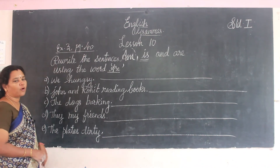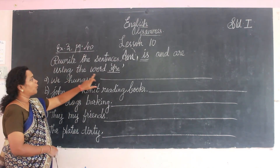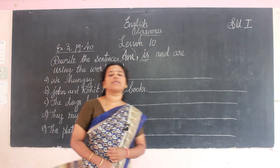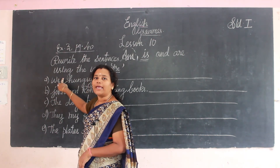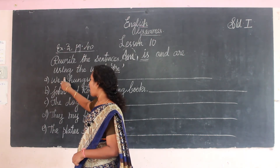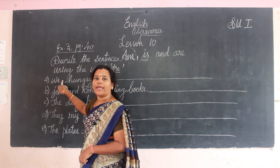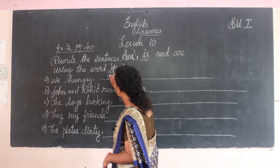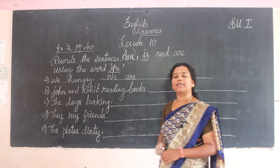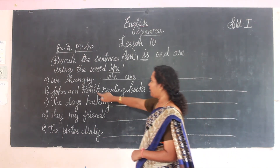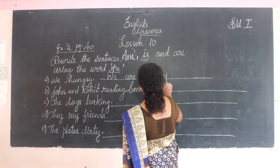Now, page number 40 in your grammar book — rewrite the sentences using the word 'are'. First: 'We hungry' — a word is missing. 'We' is plural, so we write: 'We are hungry' — W-E A-R-E H-U-N-G-R-Y.